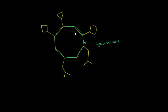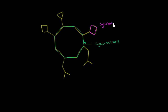Now let's think about the different groups that are attached to this backbone. First, we can look at this one right over here. We have one, two, three, four carbons attached to the backbone. Our prefix for four carbons is 'bute,' and it is in a cycle, so this is a cyclobutyl group. And we also have another cyclobutyl group right over here.